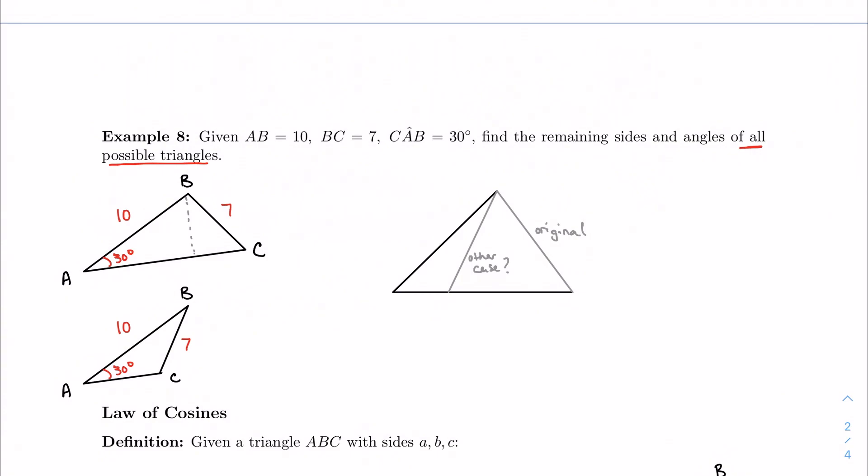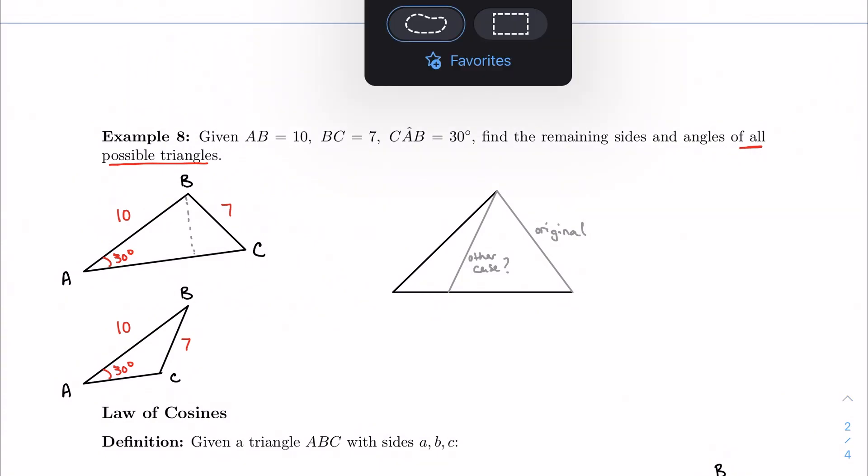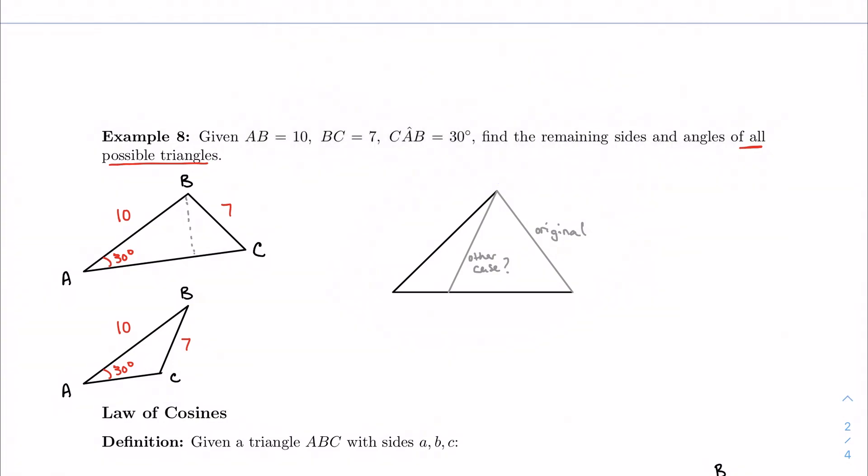Here's how it works. We're going to call this one on the top case one, and the one on the bottom case two. In case one, we're going to operate like normal for now because I have enough information to do law of sines. I can do sine A over a equals sine C over c. And I want to find side c. So not a problem.